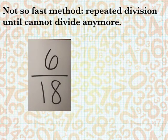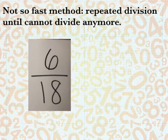When simplifying a regular fraction there are two methods. The first method is what I call the not-so-fast method. You use repeated division until you cannot divide anymore.